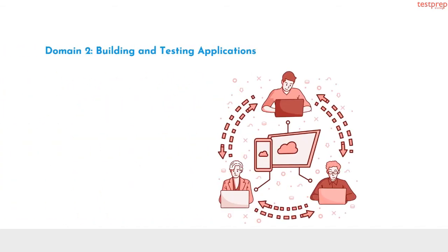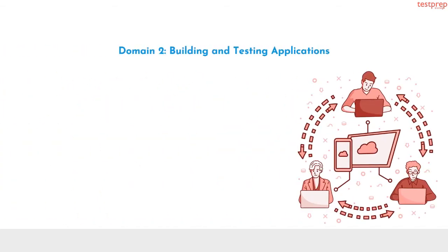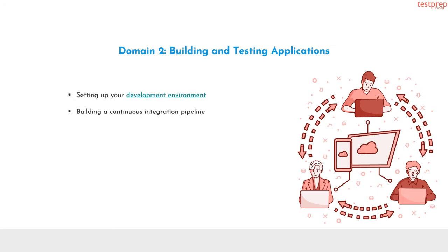Domain 2 is building and testing applications. It contains four subtopics: setting up your development environment; building a continuous integration pipeline; testing; and writing code.